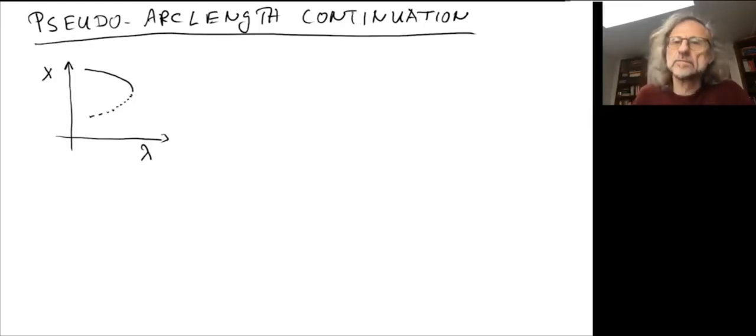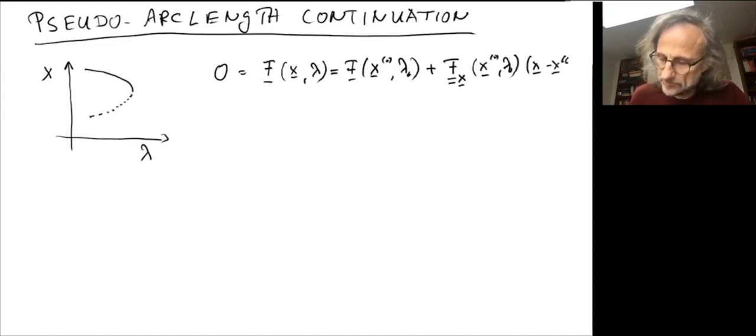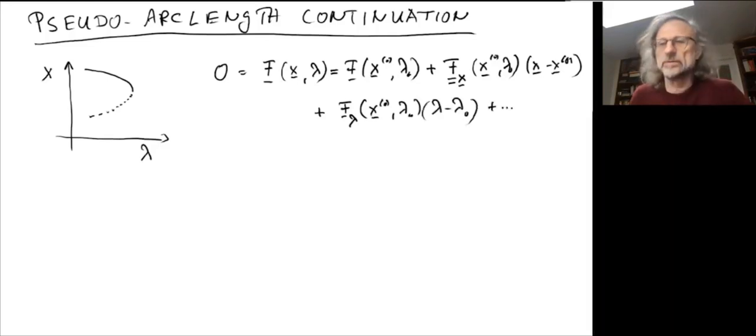Let's get started by providing your settings. We're thinking of a fixed point, so we have some function f of x and lambda, and we're expanding in Taylor as always. So that's f of x_zero and lambda_zero plus the derivative of f with respect to x, which is a Jacobian matrix at (x_zero, lambda_zero) times (x - x_zero), plus the derivative of f with respect to lambda evaluated at that fixed point times (lambda - lambda_zero), and then there will be higher order terms.